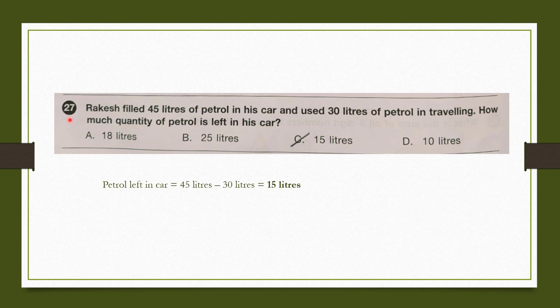Question number 27: Rakesh filled 45 litres of petrol in his car and used 30 litres in travelling. How much petrol is left? He filled 45 litres and 30 litres were already used. Amount of petrol left is 45 minus 30, which is 15 litres. So our answer is option C, 15 litres.